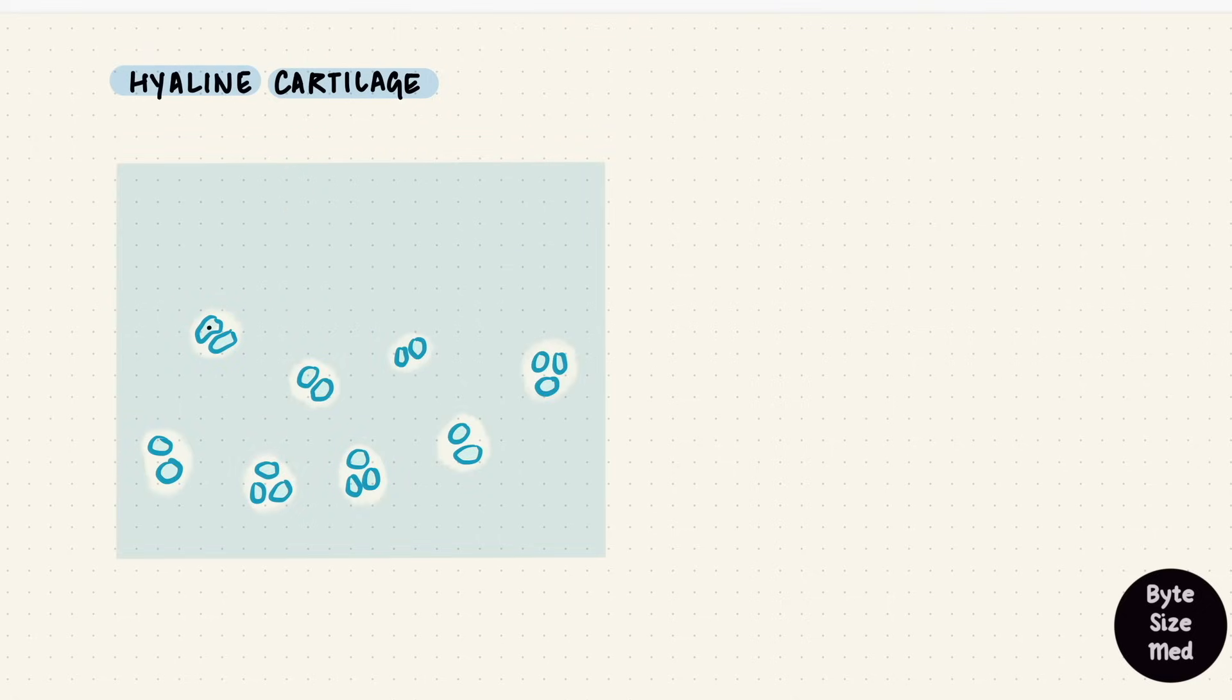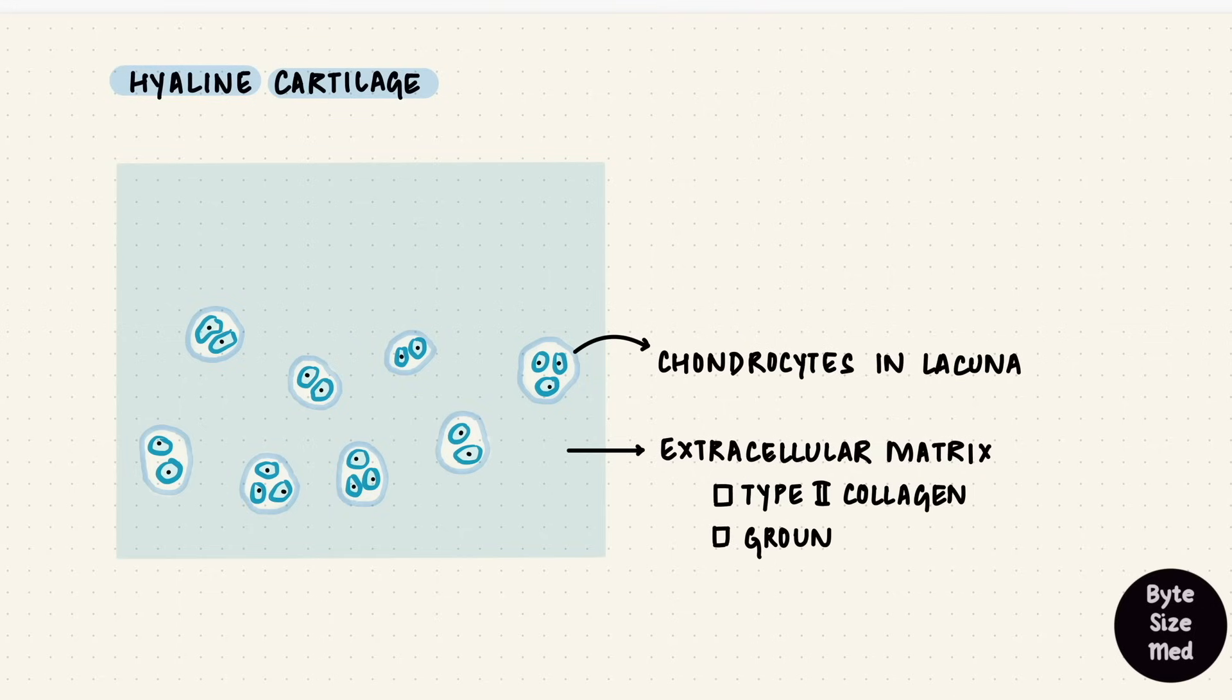The cells are chondrocytes, which are located in spaces called lacunae, either singly or in groups. The matrix consists of collagen, mainly type 2 collagen, and a well-hydrated ground substance, and these are synthesized by the chondroblasts.